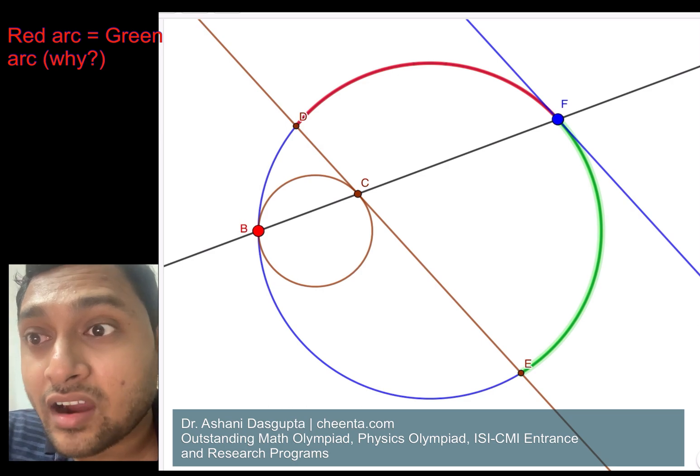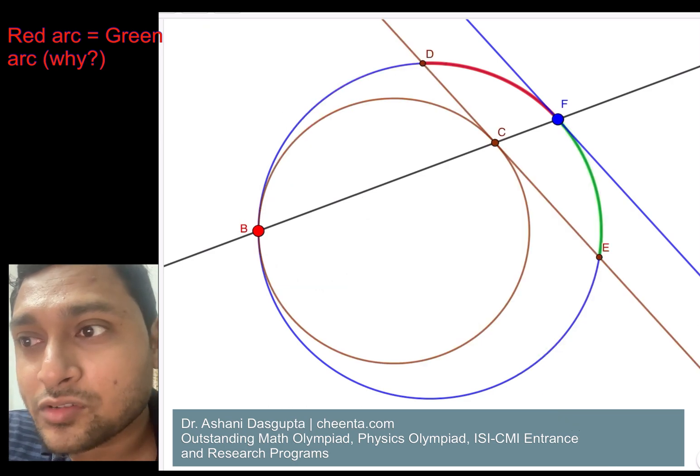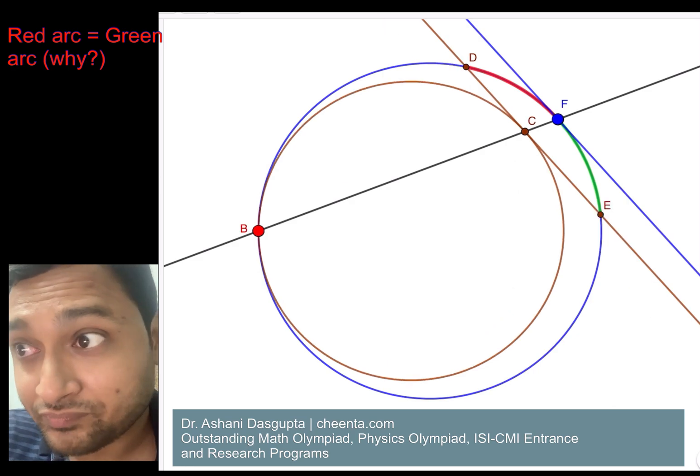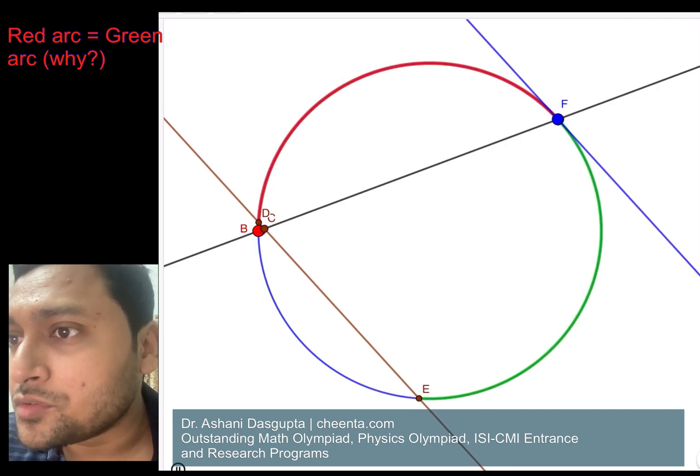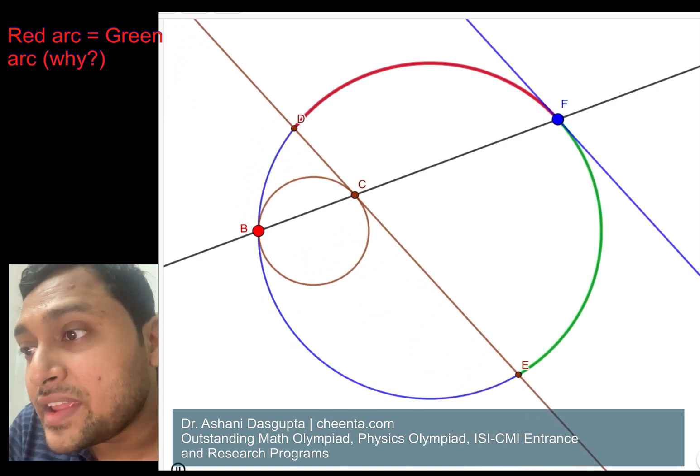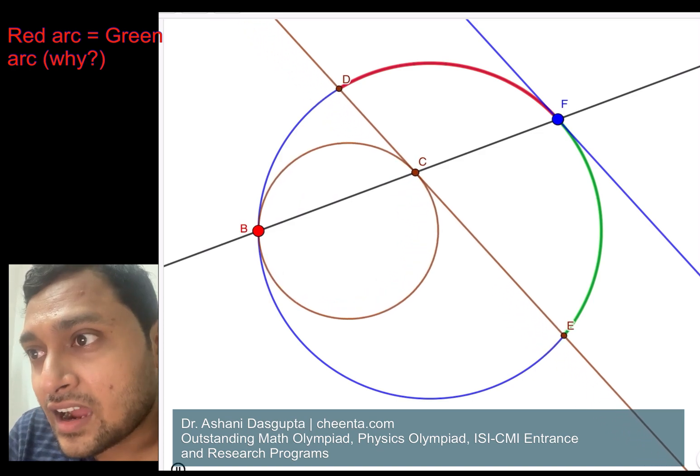The red arc and the green arc are equal in length. So you can prove it using geometry, like synthetic geometry, but let me just show this to you.